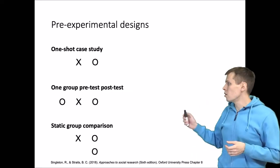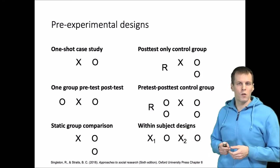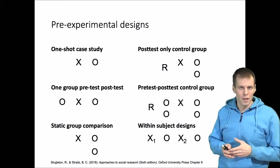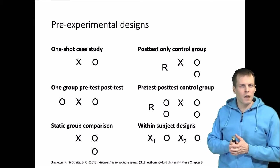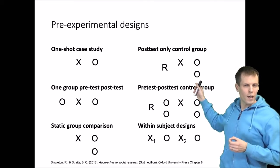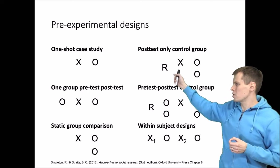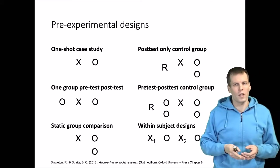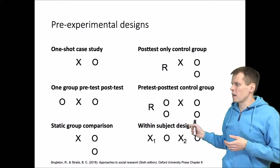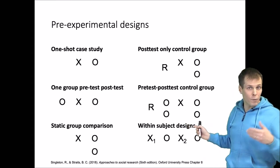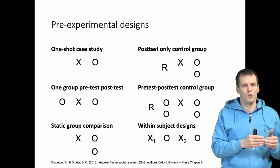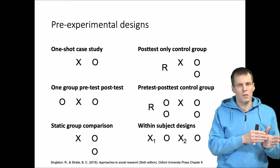Comparing these against experimental designs, we can see that the one-shot case study can be converted to a true experiment by adding randomization and a control group. Similarly, the one-group pre-test post-test can be converted to a true experiment by adding randomization to both treatment and control. Typically, when we go from pre-experimental to experimental, we add randomization and we add a control group.